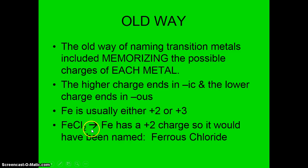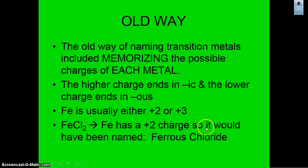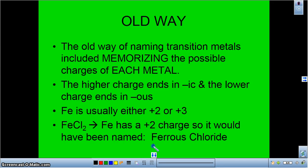since the plus 2 is the lower ending, we would use us as the ending. And we'd go back to their root name. So it would be ferrous chloride instead of iron 2 chloride. So those two are exactly the same thing. So if I were going to write this using the new method, it would be iron 2 chloride. And you can see how much easier it is to use the new naming method as opposed to the old one because there's not near as much memorization that's required.